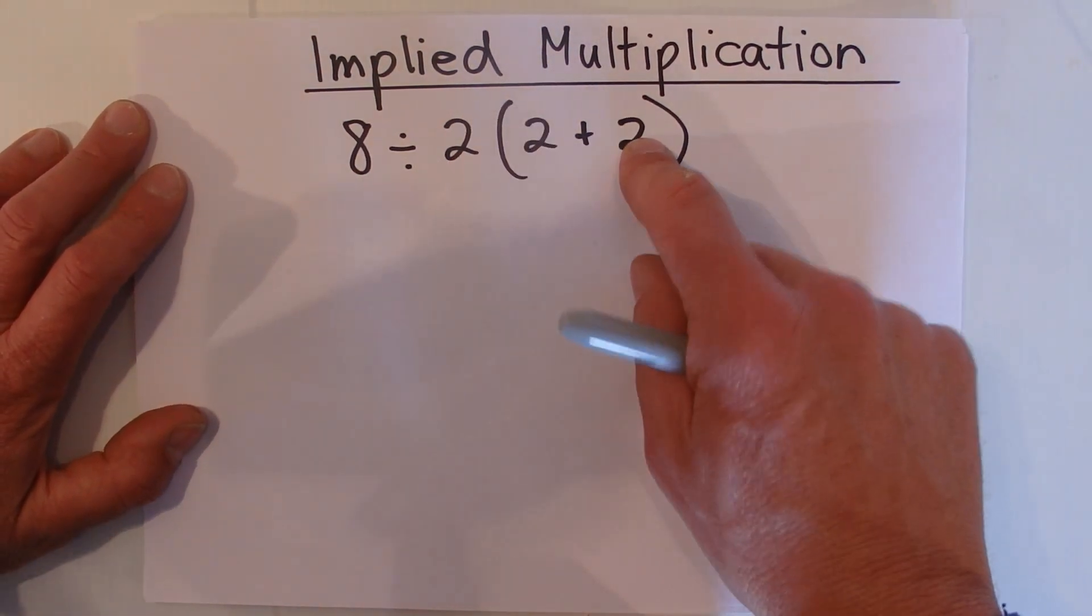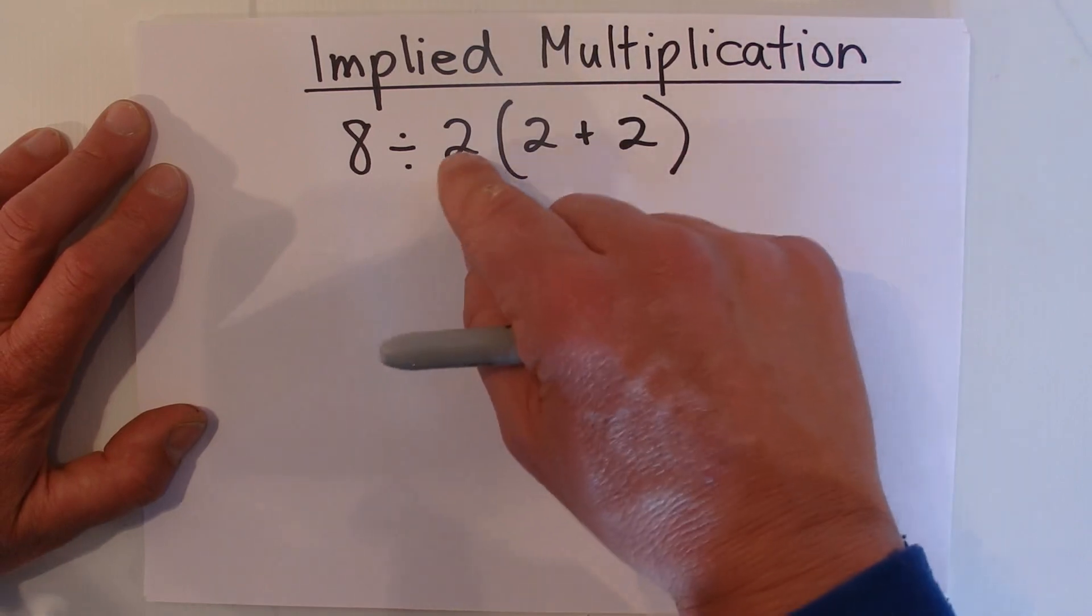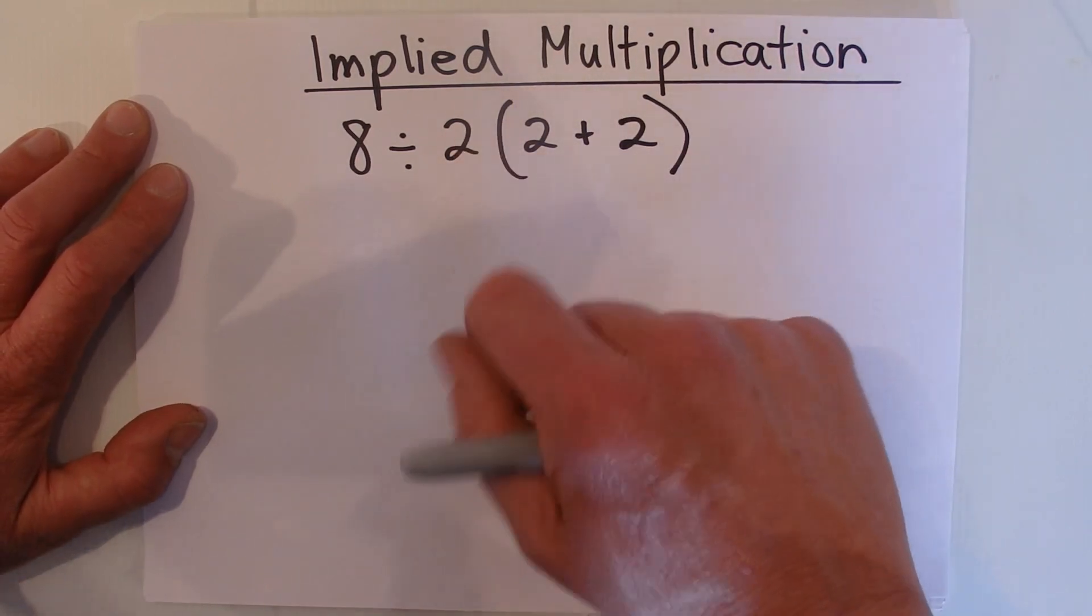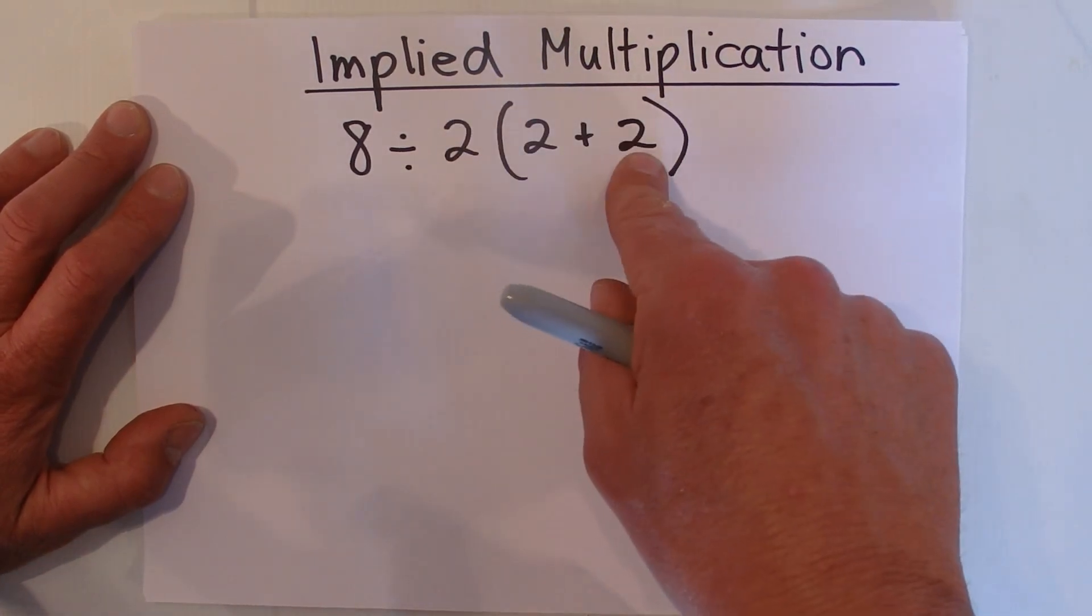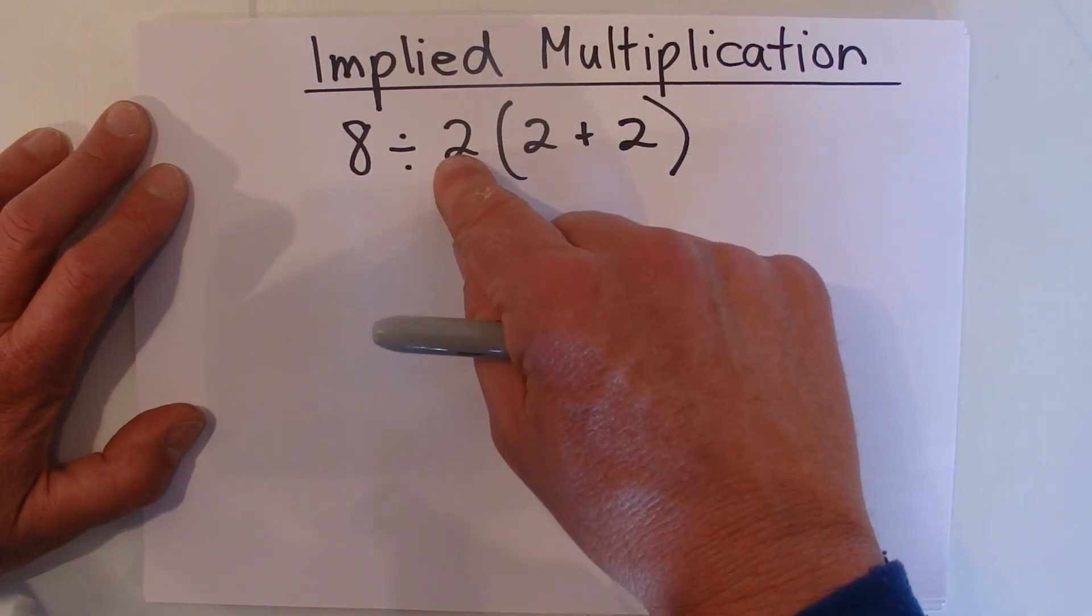we've got the 2 and then open brackets and then whatever is in the brackets, because there's no multiplication sign, it's implied that you need to multiply the 2 by whatever's inside the brackets. So that is an example...